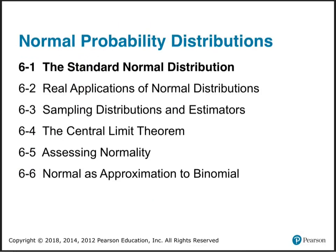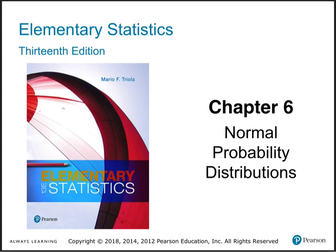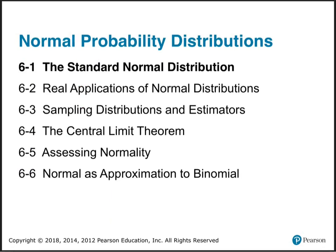Let's talk about Chapter 6: normal probability distributions. So we're still talking about probability distributions. We did binomial ones — two-state ones. Now we're going to do normal ones.